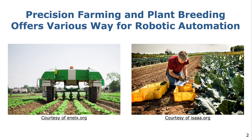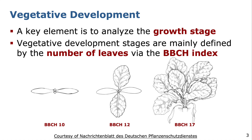On the other hand, plant breeders continuously generate new genetic variations of crops to keep yields high. These variations are then planted and their performance is assessed. A key element to assess the performance and vegetative development of individual plants is to analyze the growth stage, which can be defined by the BBCH index. This index defines the vegetative development mainly by the number of leaves produced on the main stem. At the bottom you can see an example of BBCH index 10, where the crop has developed its first two leaves. This index increases as the number of leaves increases.